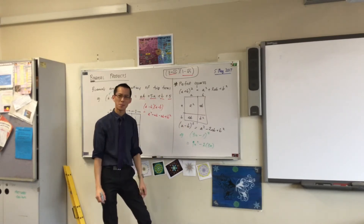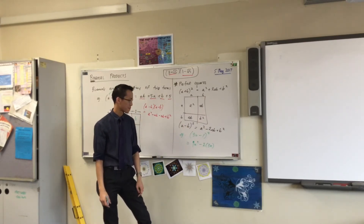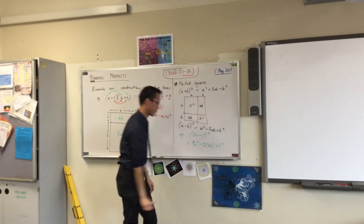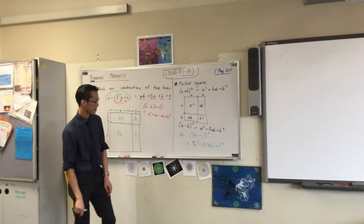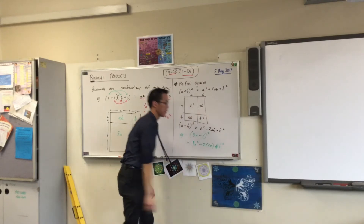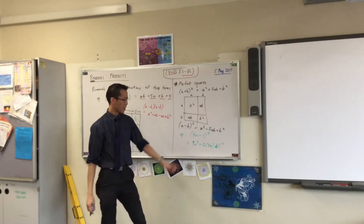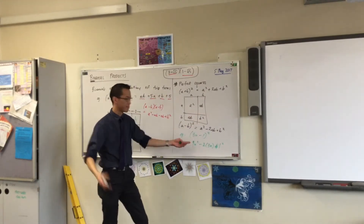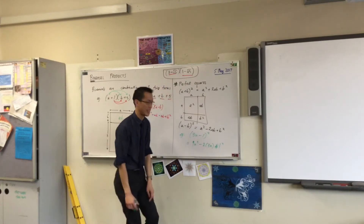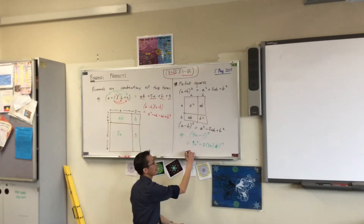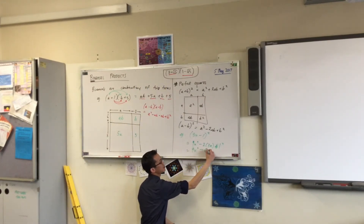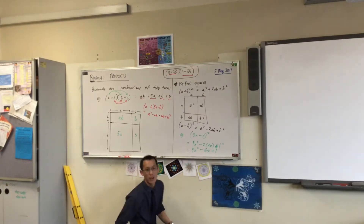What ends up on the end? 1 squared. The b in this case is 1, so I've got b squared over there, so I'm writing 1 squared down here. All that's required now is just to tidy up that middle term: minus 6x plus 1.